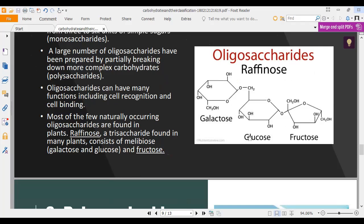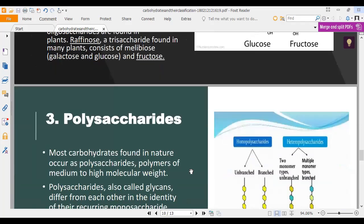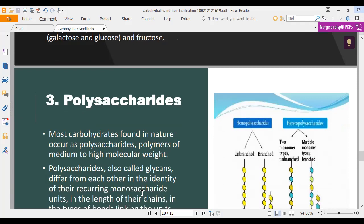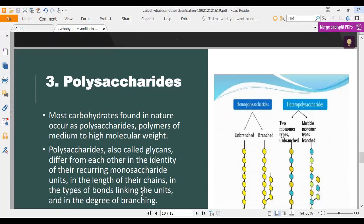Most carbohydrates found in nature occur as polysaccharides, polymers of medium to high molecular weight. Polysaccharides, also called glycans, differ from each other in the identity of their recurring monosaccharide units, in the length of their chains, in the types of bonds linking the units, and in the degree of branching.